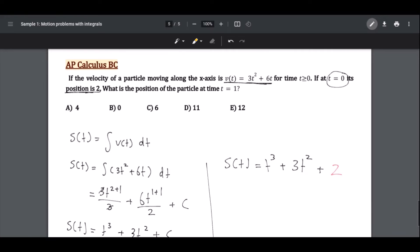Let's go back to the question again. It asks us, what is the position of a particle at time t = 1? So you're going to just replace t with 1, equal to 1 to the power of 3.